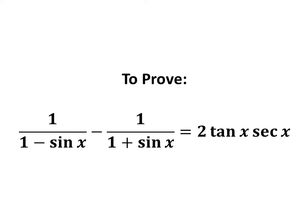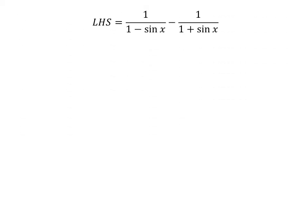In this video, we will learn to prove the trigonometry identity: 1 upon 1 minus sin(x) minus 1 upon 1 plus sin(x) is equal to 2 times tangent of x times secant of x. Let us start from the left hand side of the identity, which is equal to 1 upon 1 minus sin(x) minus 1 upon 1 plus sin(x).